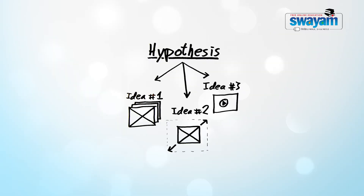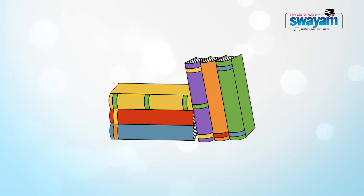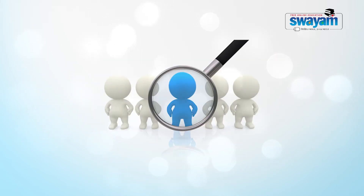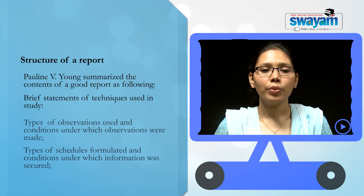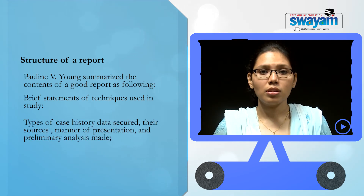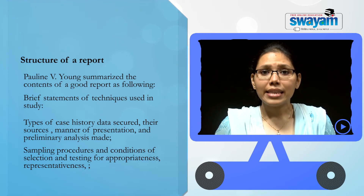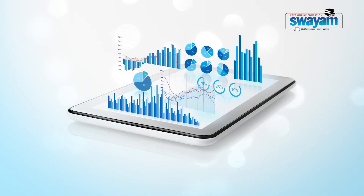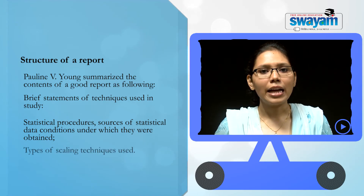Second, a brief statement of the working hypothesis which guided the study. Third, explicit definitions of the units of study. Fourth, a brief statement of techniques used in the study — for example, types of observations used and conditions under which observations were made; types of case history data secured, their sources, manner of presentation and preliminary analysis made; sampling procedure and conditions of selection and testing for appropriateness and representativeness; statistical procedure, sources of statistical data, conditions under which they were obtained, and types of scaling techniques used.